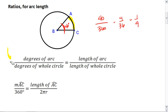This leads us to these general formulas. We notice that the degrees of the arc to the degrees of the whole circle tells us what fraction of a circle we're working with. That ratio equals the length of the arc compared to the length of the whole circle.